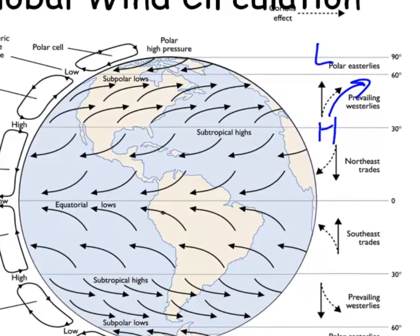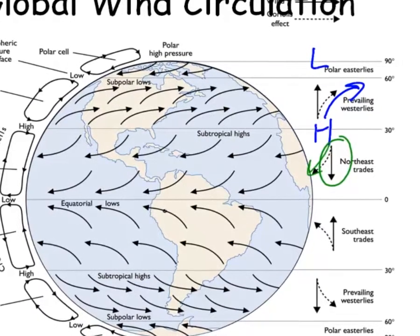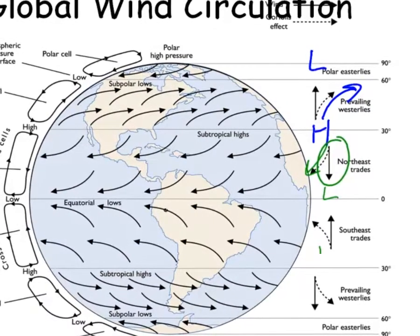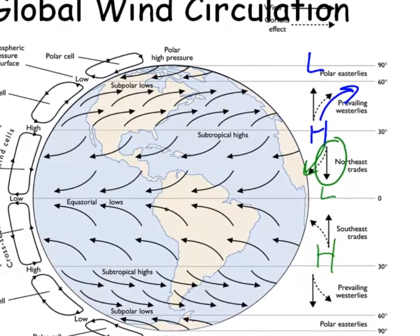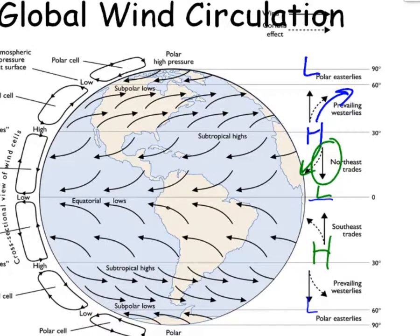So here's one cell. Here's another cell you've got here, moving from high pressure to low pressure. Same thing down here. But it gets deflected now, it's in the southern hemisphere, deflected to its left.